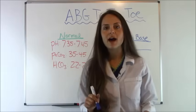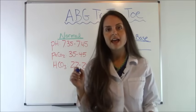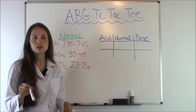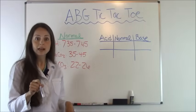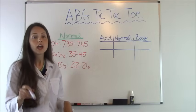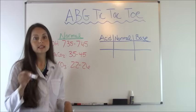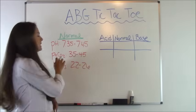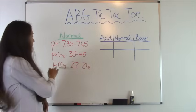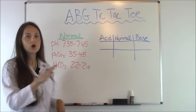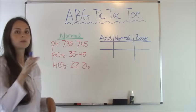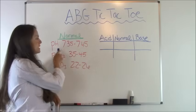First, let's talk about the tic-tac-toe method and how to use it with ABGs. The very first thing you want to learn before you start solving ABG problems is you need to learn the normal values. In a problem, you'll be given the pH level, the PaCO2 level, and the HCO3 level, so you need to know what the normal ranges are. Here are the normal ranges - I would write this down.